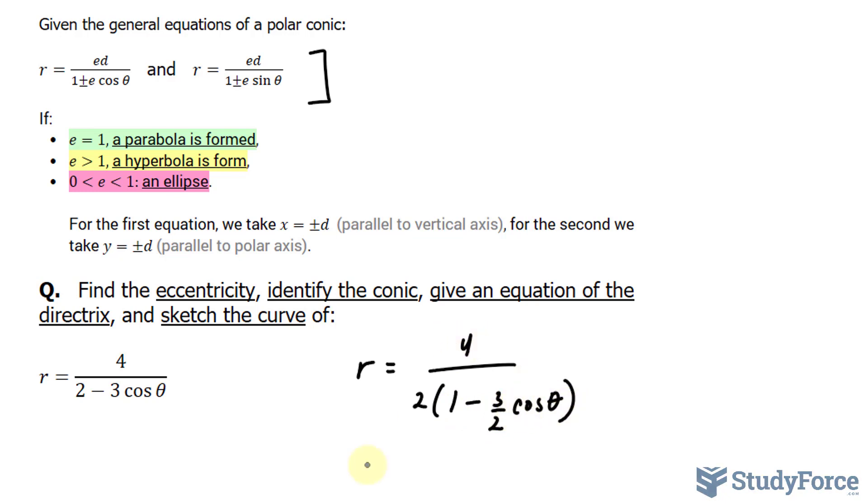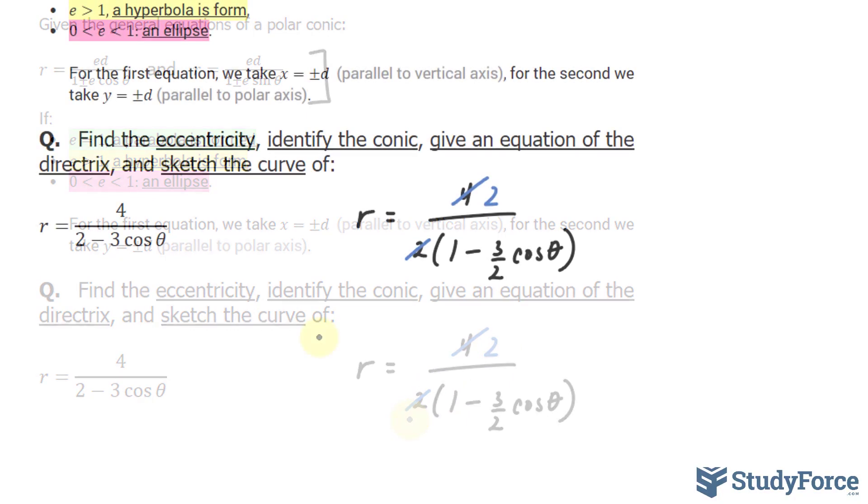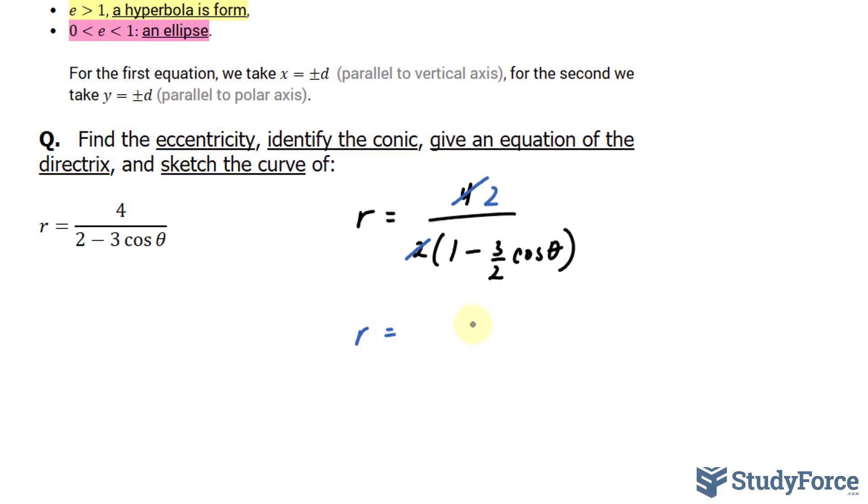At this point, four over two can be reduced down to two over one. We don't need to write that one. So our equation, technically, is r equals two over one minus three over two cosine theta.